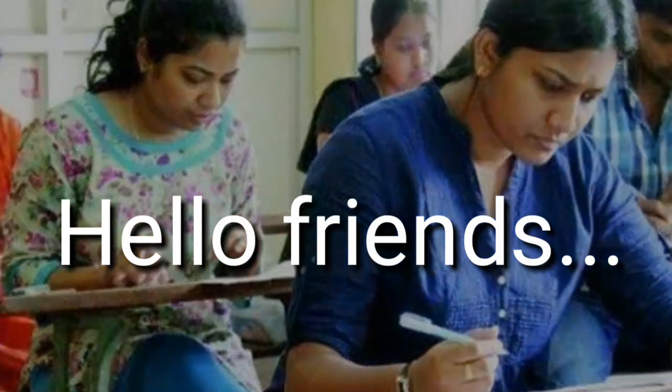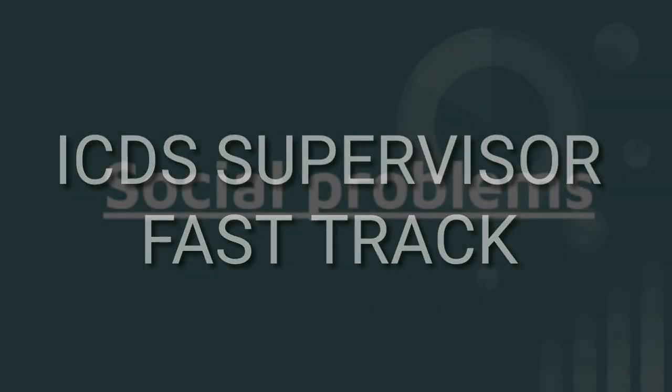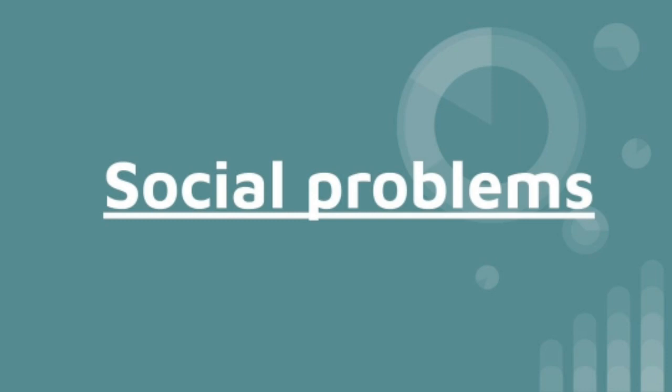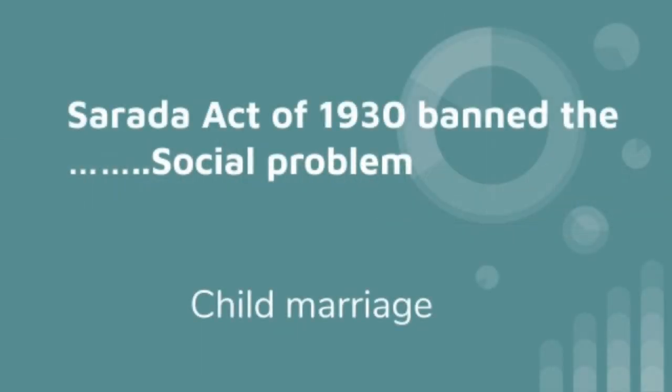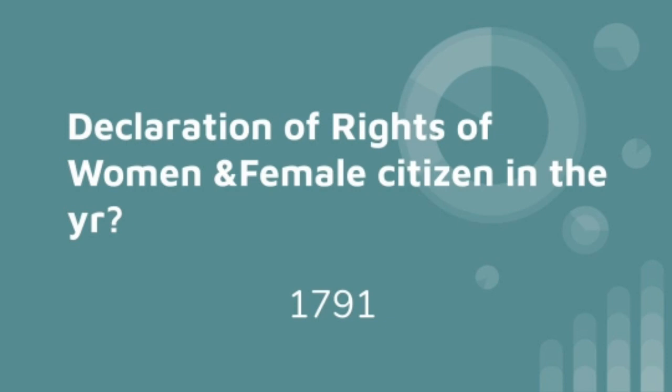Hello friends, once again welcome back to ICDS Supervisor Fast Track. Today we are discussing the topic Social Problems. The Act of 1930 banned the social problem of child marriage. The Declaration of Rights of Woman and Female Citizen was in the year 1791.